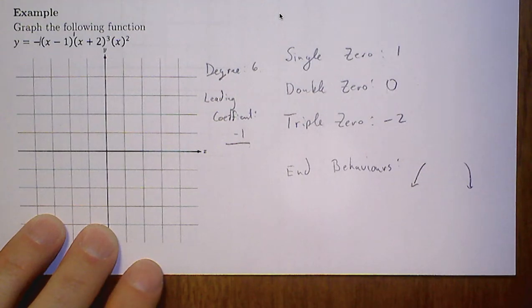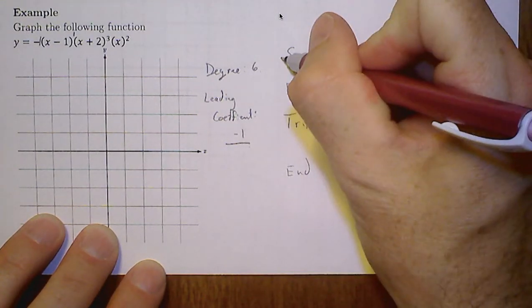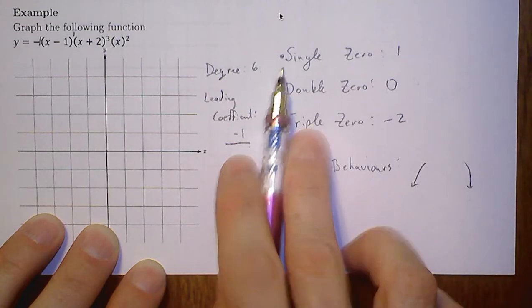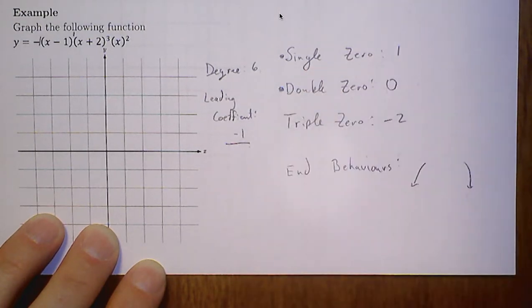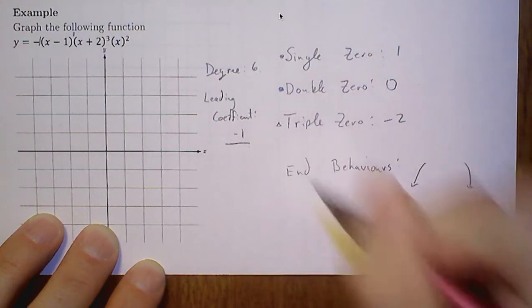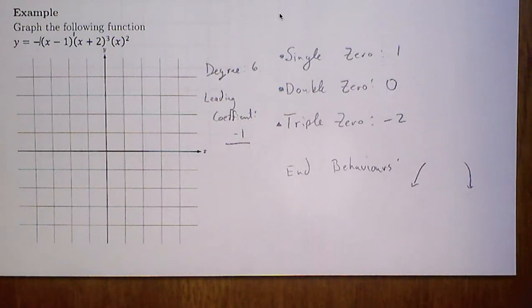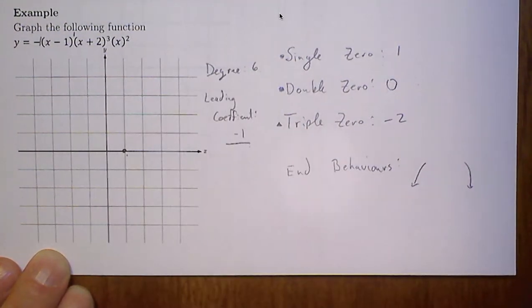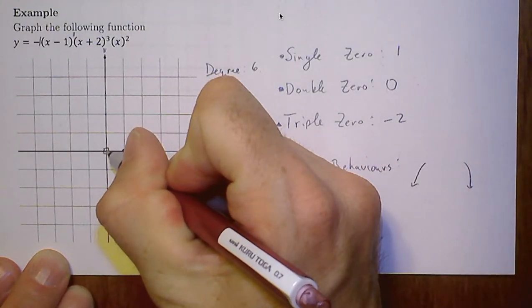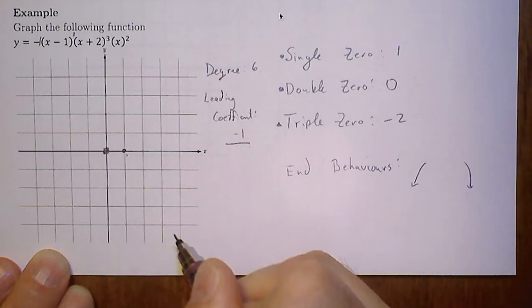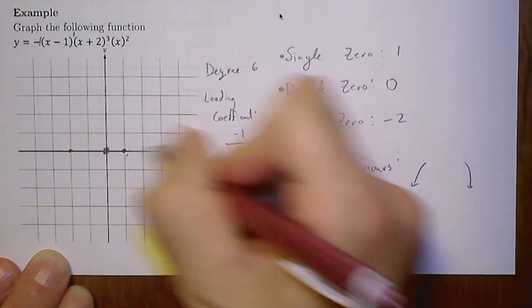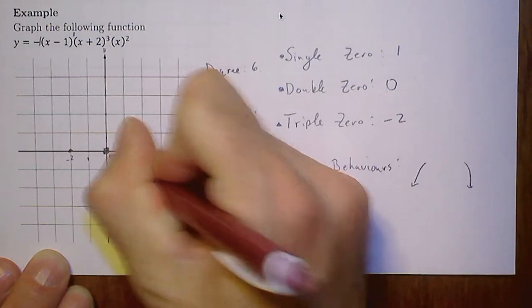I always like to just do this for myself, because otherwise I'm going to mess it up. A single zero, I'm going to denote as a dot. A double zero, I'm going to denote as a box. And a triple zero, a triangle. It doesn't matter what shape you use, it just makes you aware that you have to be careful. So I have a single zero at 1, so I have a single zero there, a nice dot. A double zero at 0, so I'm going to put a square there. A triple zero is at negative 2.